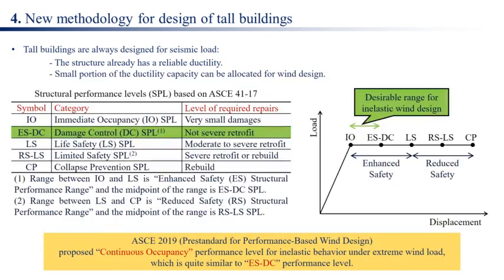Tall buildings are always designed for seismic load, so the structure already has reliable ductility. A small portion of that ductility capacity can be allocated for wind design. Based on structural performance levels (SPL) from ASCE 41-17, an inelastic wind design approach is proposed. The ASCE 2019 pre-standard for performance-based wind design proposed a continuous occupancy performance level for inelastic behavior under extreme wind load, which is quite similar to the ESDC performance level.